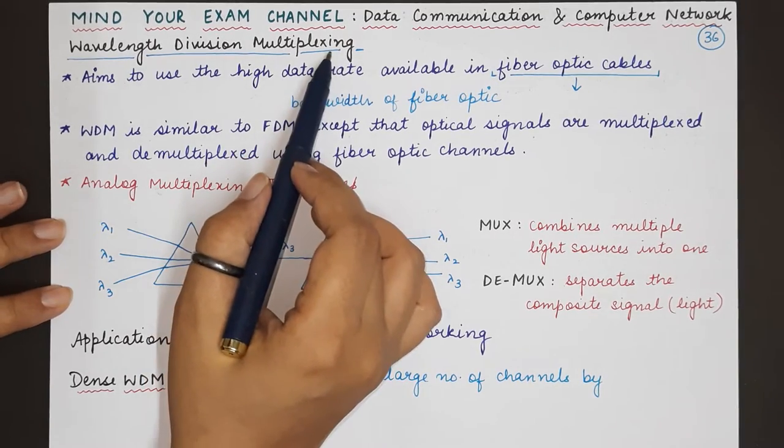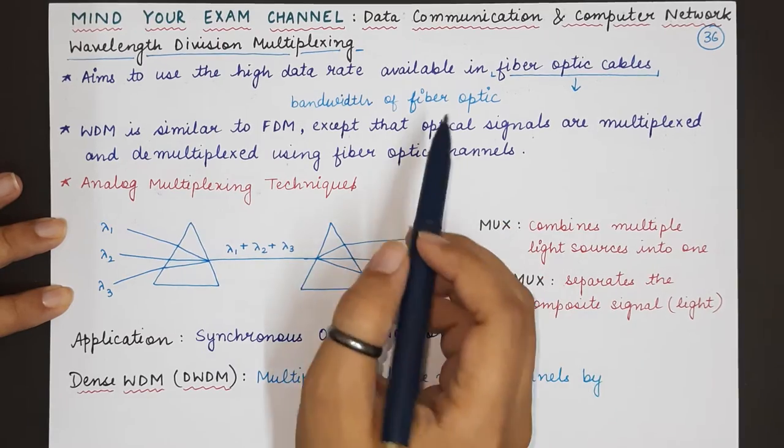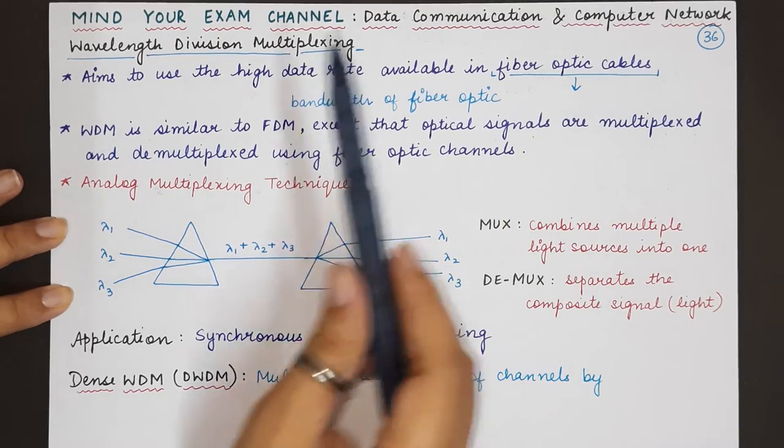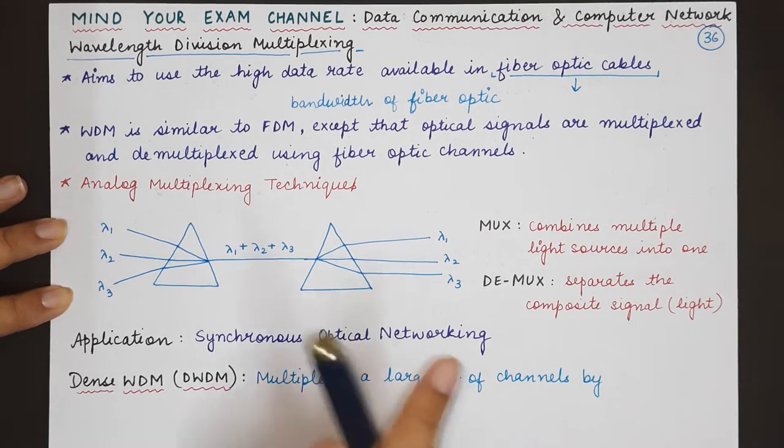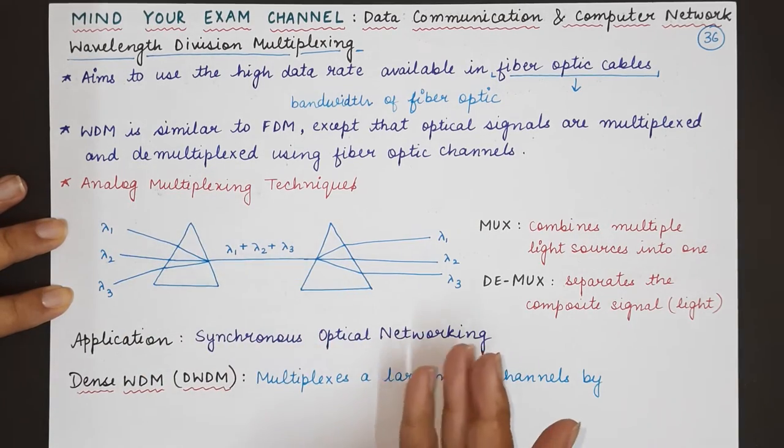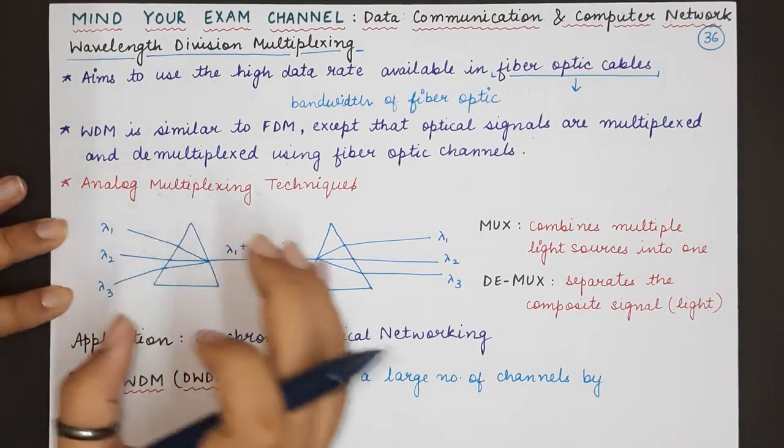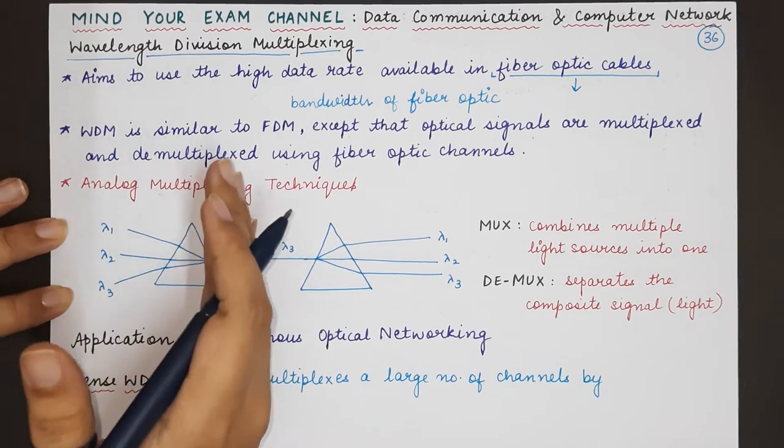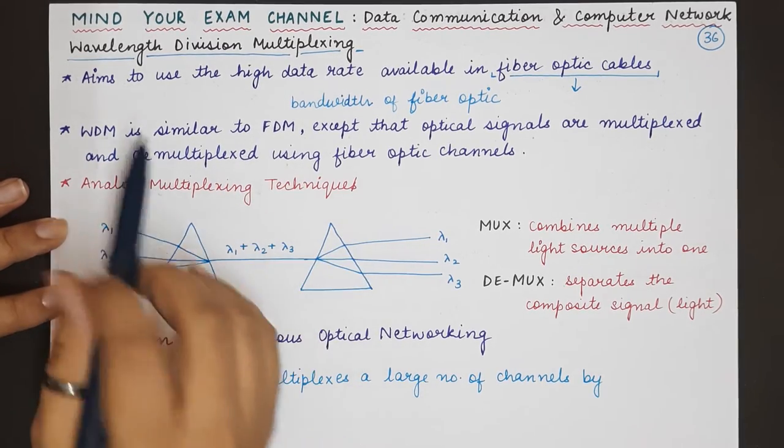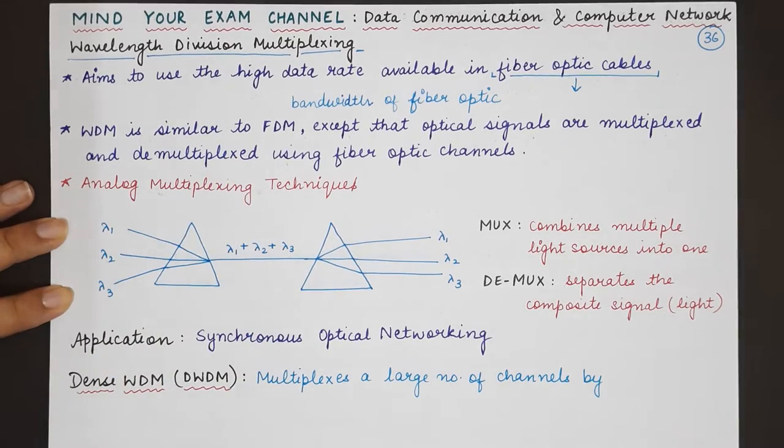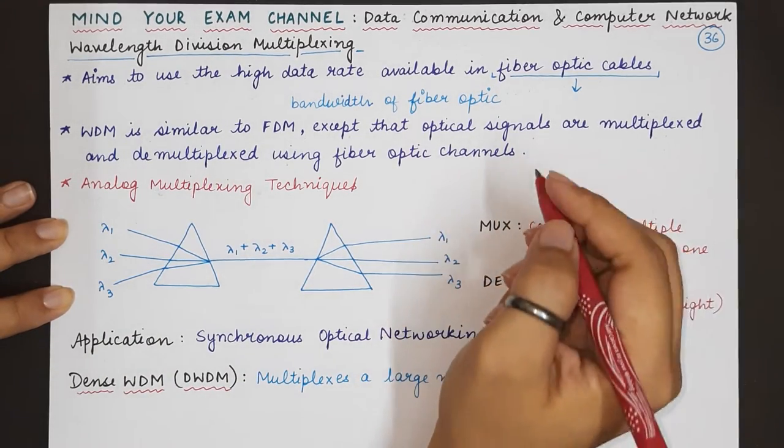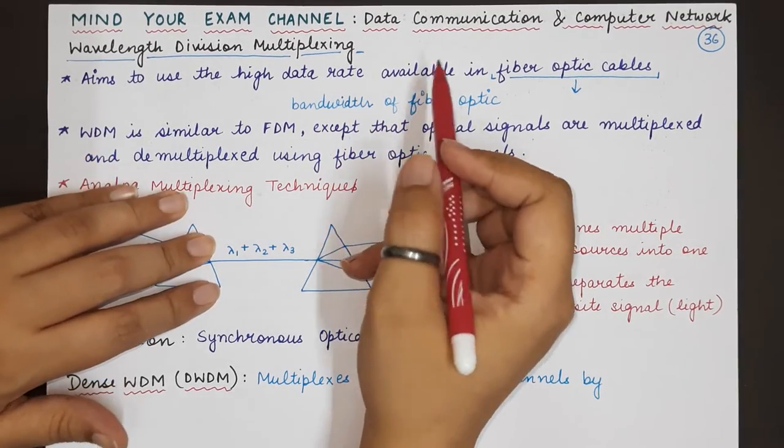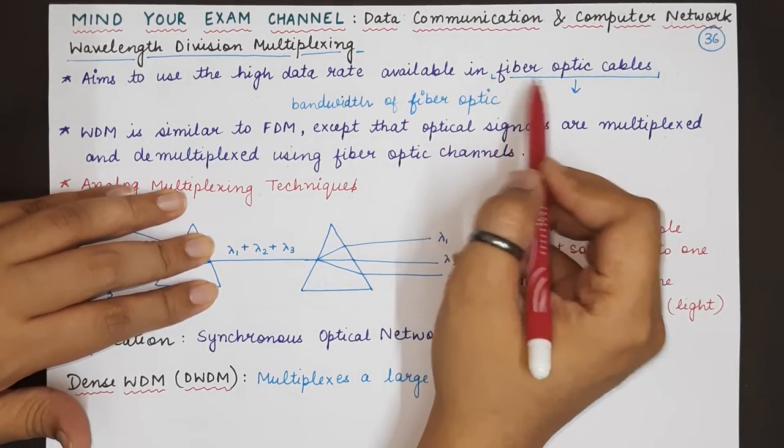Now in wavelength division multiplexing we are basically aiming to optimally utilize the bandwidth of a fiber optic cable. So this was the entire concept behind multiplexing that the bandwidth of a link is not utilized completely and that is why we create a composite signal consisting of multiple individual signals which are modulated using a carrier frequency. In case of wavelength division multiplexing we are actually modulating optical signals and utilizing properly the available bandwidth of a fiber optic cable.